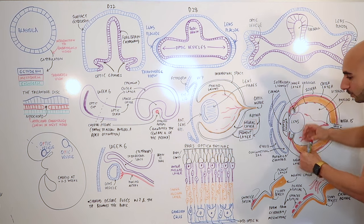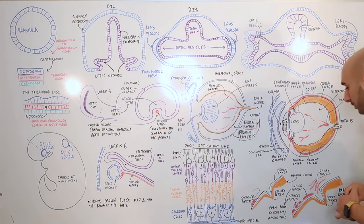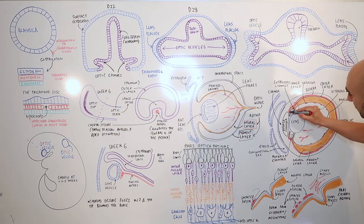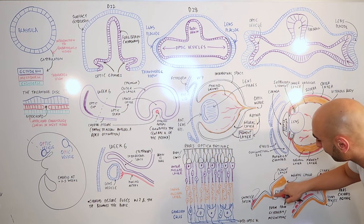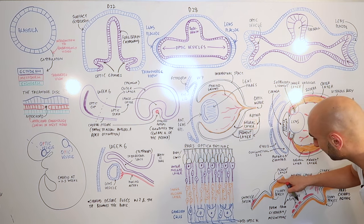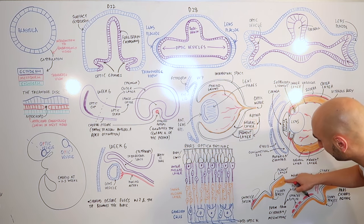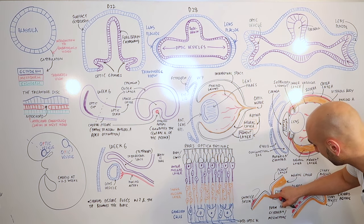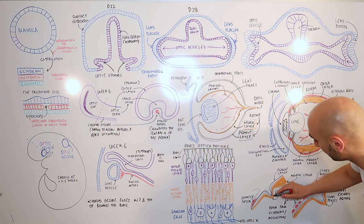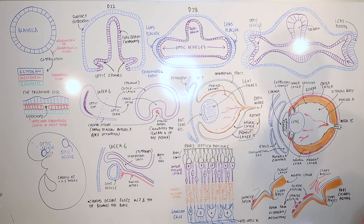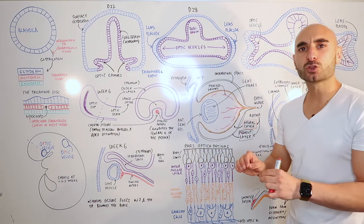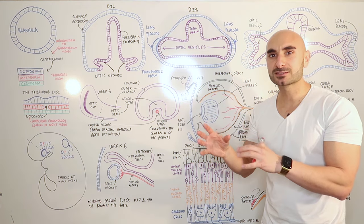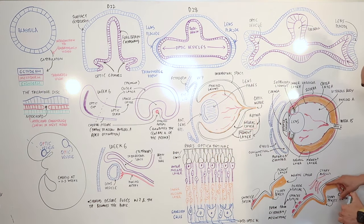The ciliary process is connected to the lens via the suspensory ligament, which controls contraction of the lens adapting to certain light conditions. The ciliary process shows folding of the pigment layer and neural layer; in the most anterior aspect, the ciliary process is where aqueous humor is formed. As we grow, the mesenchyme differentiates into the sphincter pupillae and dilator pupillae, including the ciliary muscles.